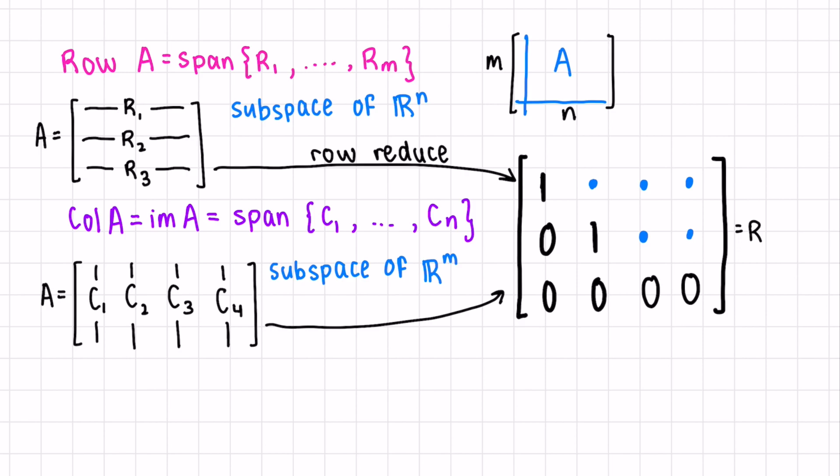Now we get a matrix that is in row echelon form, and this is useful for finding the basis of the row space and the basis of the column space. It's important to note that row operations don't change the row space, and column operations don't change the column space.